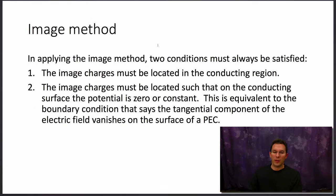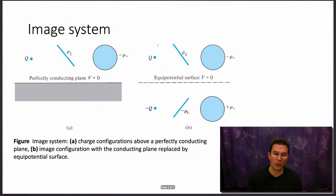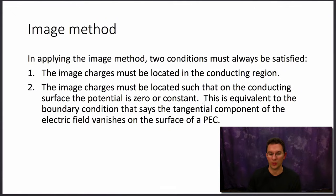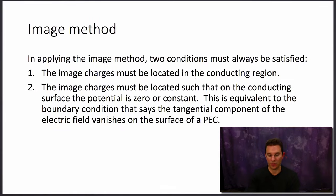In applying the image method, two conditions must always be satisfied. Number one: the image charges must be located in the conducting region. If you look at the previous picture, the image charges are all in the region that used to be occupied by the conductor. Number two: the image charges must be located such that on the surface of the conductor the potential is zero or constant — equivalent to the boundary condition that the tangential component of the electric field vanishes on the surface of a perfect electrical conductor.